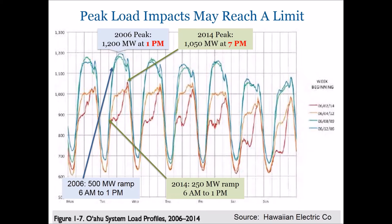More solar today is not going to reduce peak demand anymore because the peak demand is now at 7 p.m. after the sun has gone down. We're beginning to see the load actually declining a little bit at noon below the morning levels and the duck curve shape appearing in Hawaii.